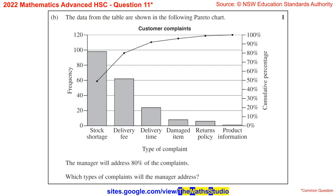Part B. The data from the table are shown in the following Pareto chart. The manager will address 80% of the complaints. What types of complaints will the manager address?